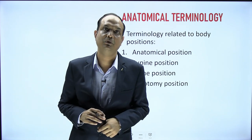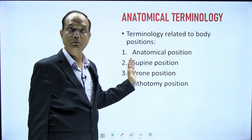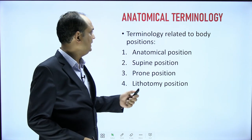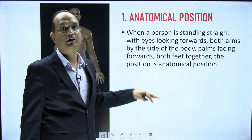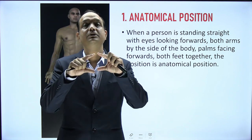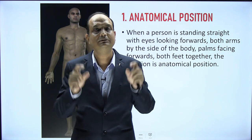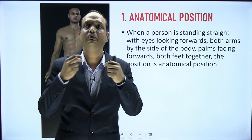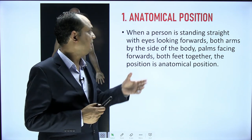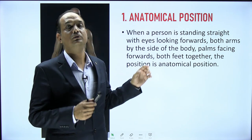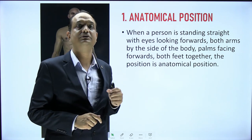The next topic is body position, which is most commonly of four types: anatomical position, supine position, prone position, and lithotomy position. The anatomical position is important because it standardizes anatomy universally — there is universal acceptance of all terms based on this position, making it the foundation of anatomy. Whenever you read any anatomy book from anywhere in the world, everyone follows this position to create uniform terminologies.